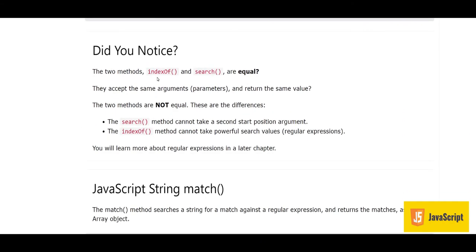You may notice indexOf and search look equal — they accept the same parameter and return the same value — but they are actually different. The search method cannot take a second start position argument, while the indexOf method cannot take powerful search values like regular expressions. You will learn more about regular expressions in a dedicated upcoming chapter.